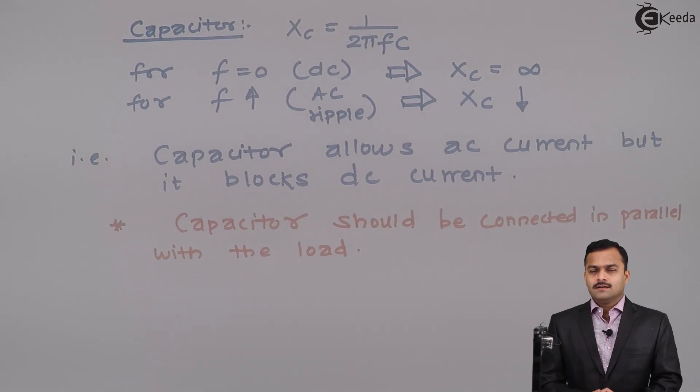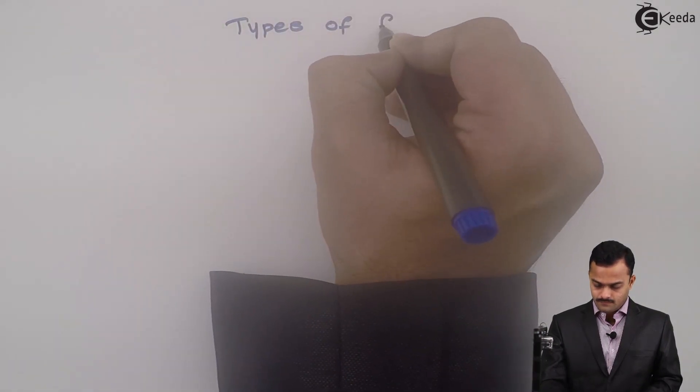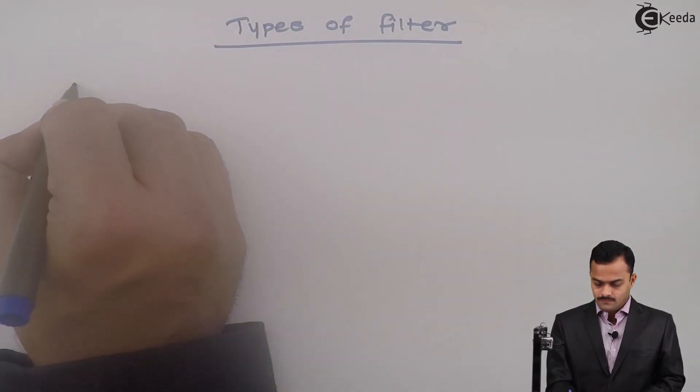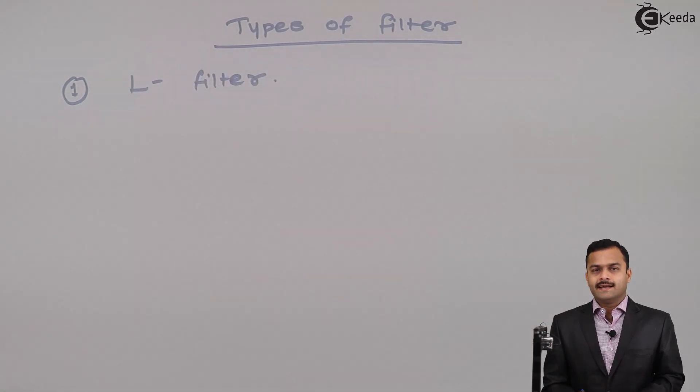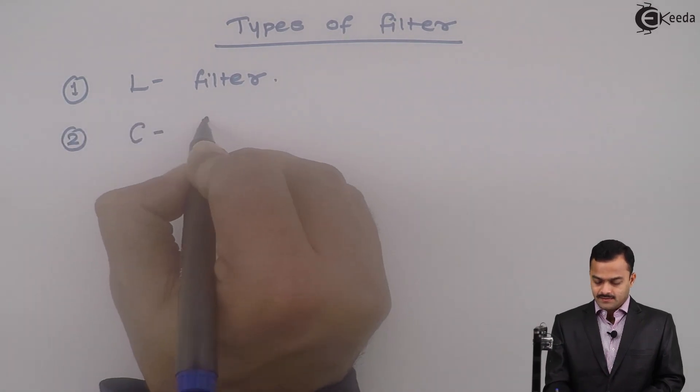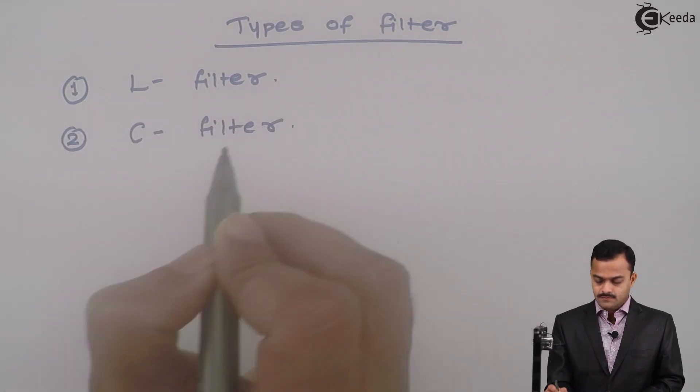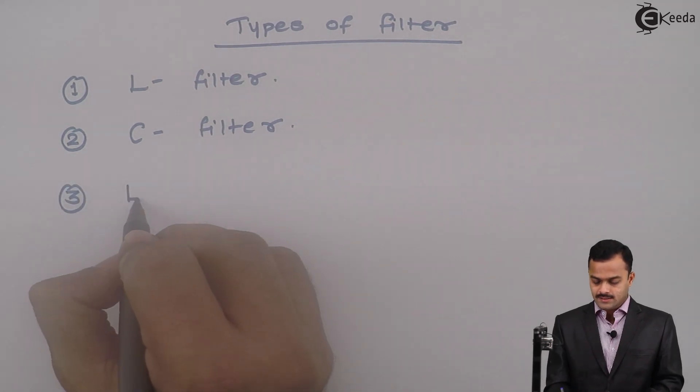Based on the components used and their combination we can have these types of filters. L filter, you can say inductor filter. Second, capacitor filter, C filter. Third, combination of L and C. We call that as LC filter.